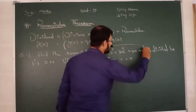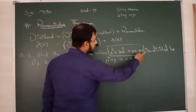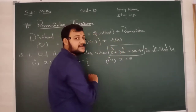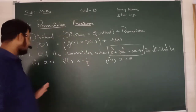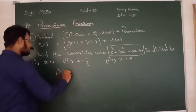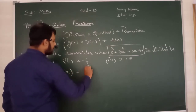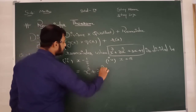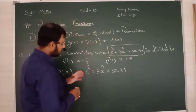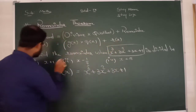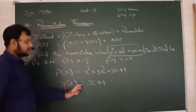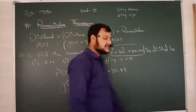Dear students, find the remainder when x³ + 3x² + 3x + 1 is divided. इसको हम divide करने वाले हैं, तो ये हमारा dividend बन गया. बहुत सारे numbers हैं - पहले इसका solve करेंगे, बाद में इसका, और फिर इसका. So our p(x) is x³ + 3x² + 3x + 1. जिससे हम divide करने वाले हैं वो बन जाएगा हमारे लिए g(x). So g(x) = x + 1.